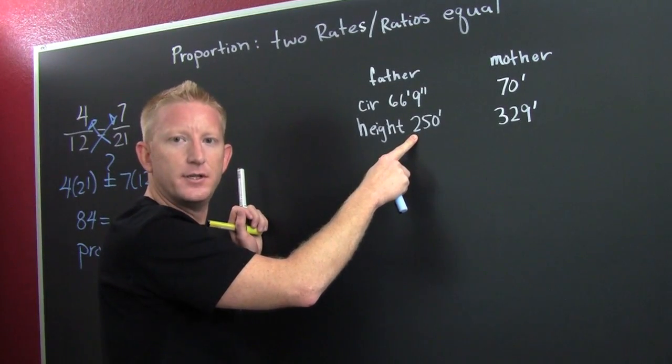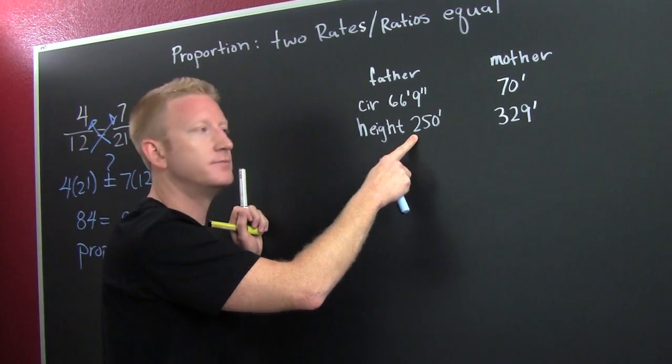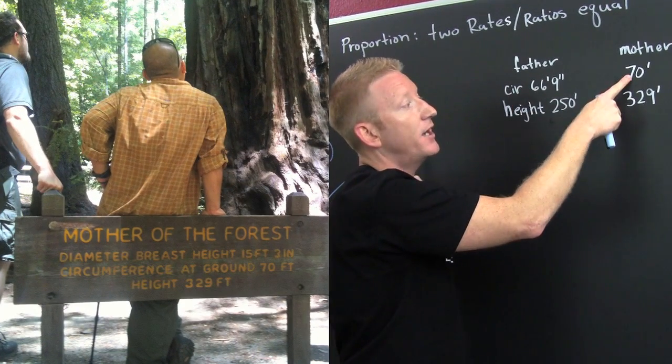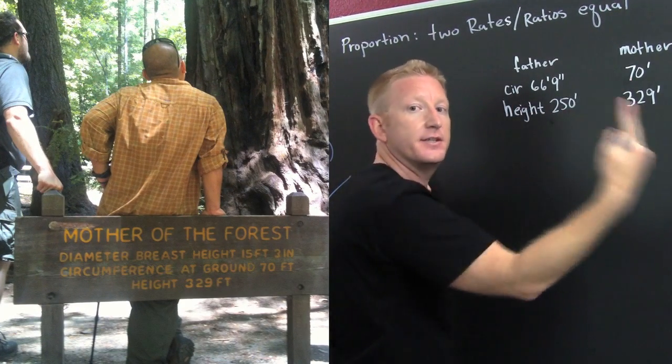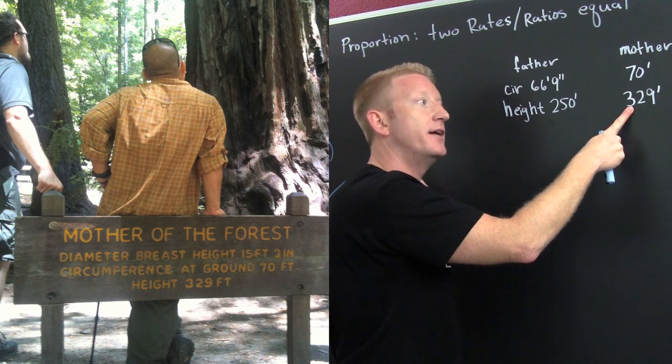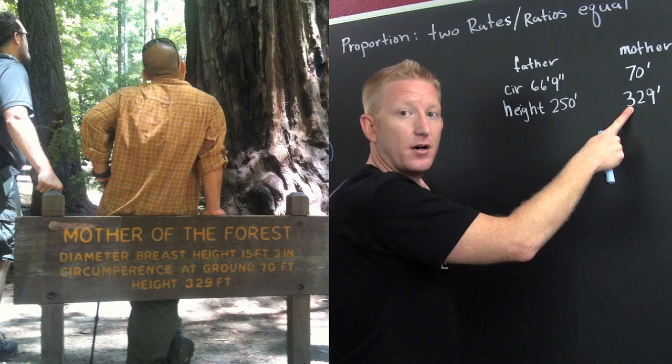And the mother tree had a circumference of 70 feet. That was around the base. And that tree was 329 feet tall. We want to see whether or not these guys are in proportion.